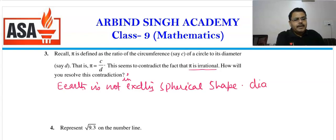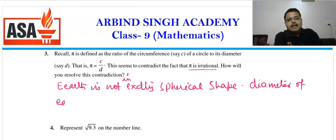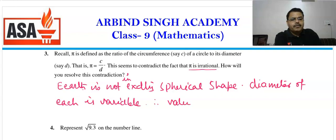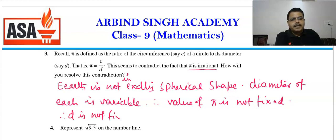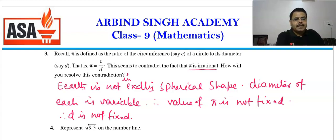The diameter of the Earth is variable. Since the Earth is not exactly spherical, its diameter is variable. Therefore, the value of π is not fixed. Since d is not fixed, even though it seems to be rational, it is irrational. And therefore π is an irrational number.